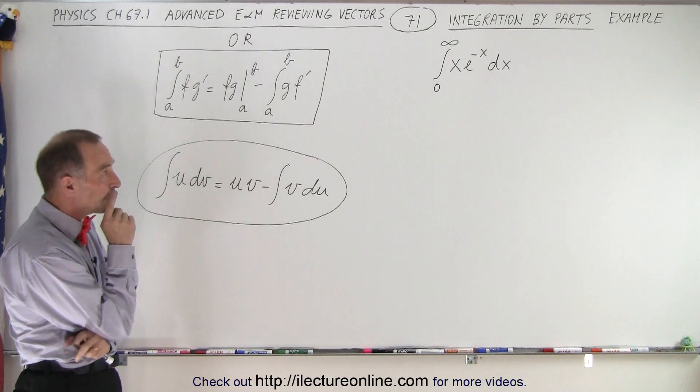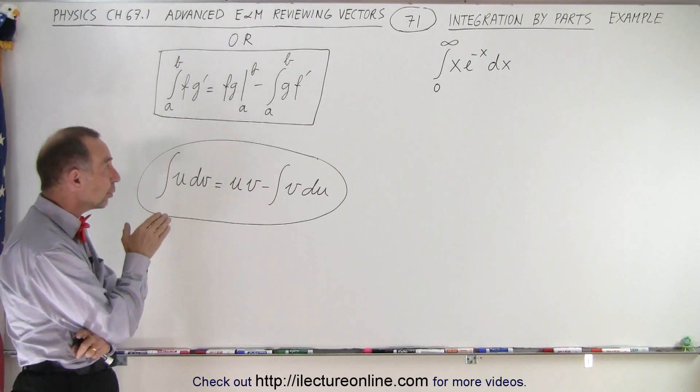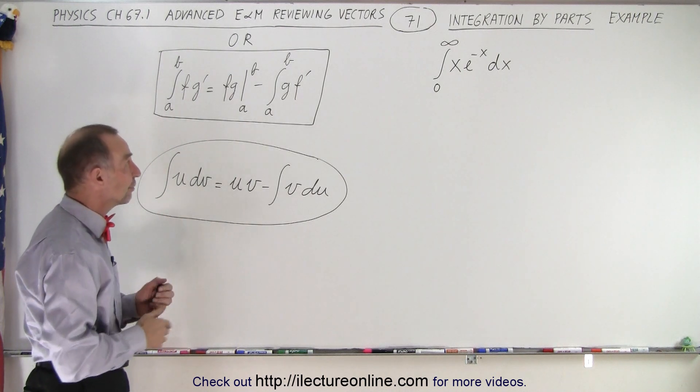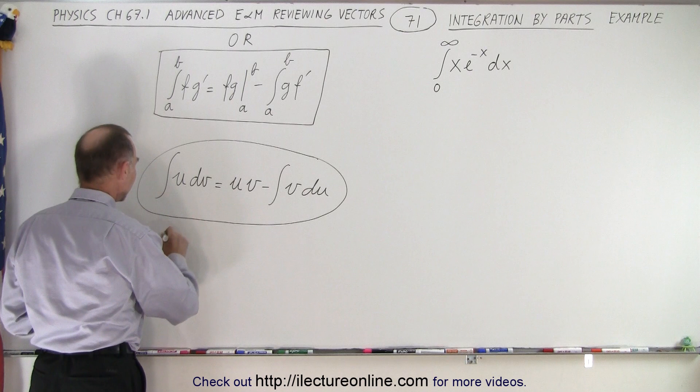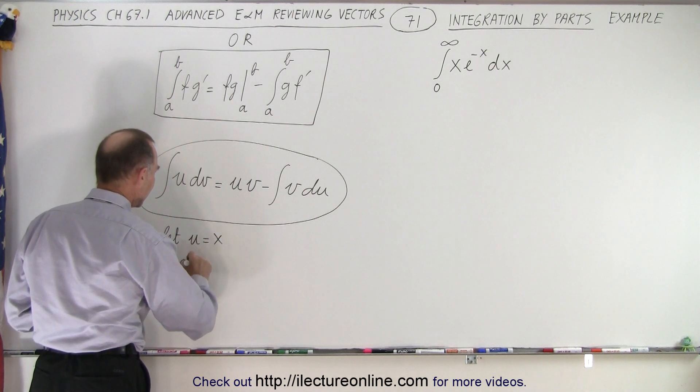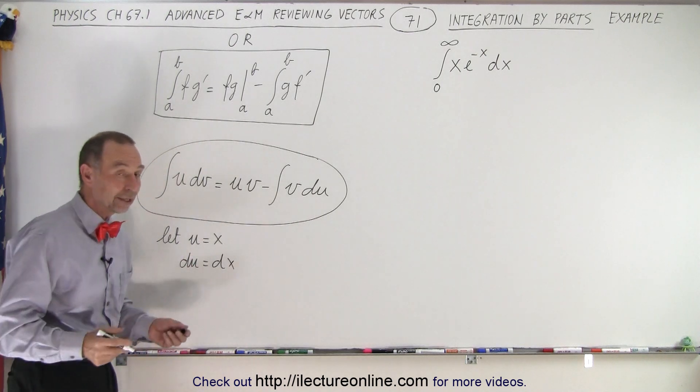So if we look at that, we take a look at the parts and we begin to realize one of them is easy to integrate and the other one we can make disappear by going from the u format into the du format. For example, if we let u equals x, then du equals dx and dx disappears from the integral.